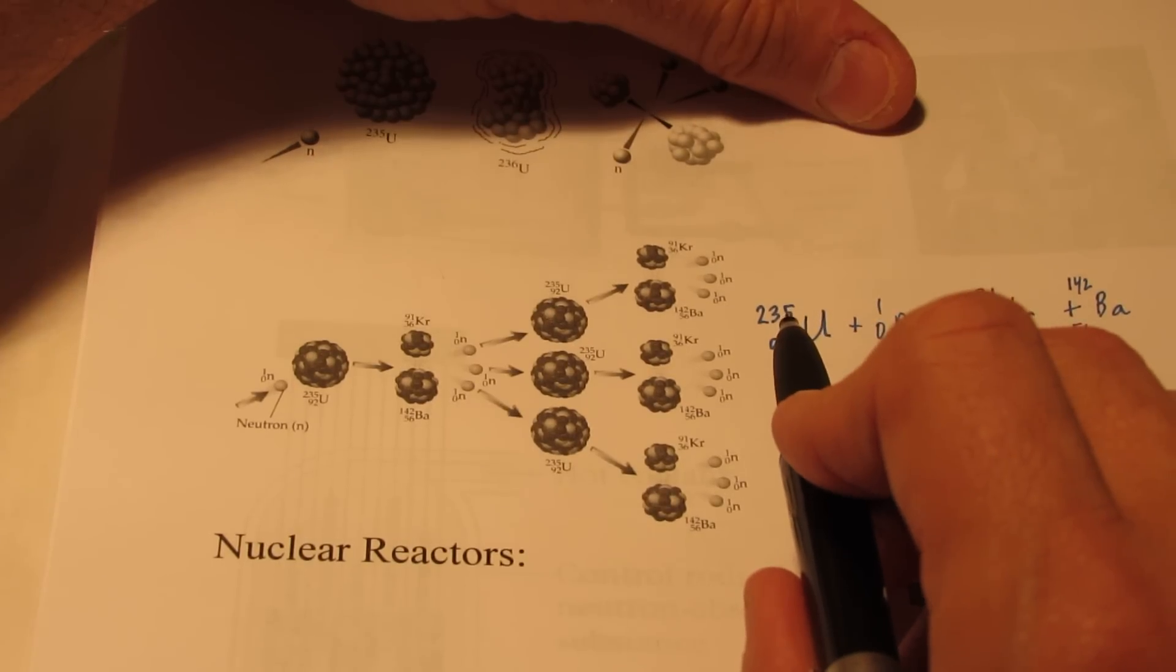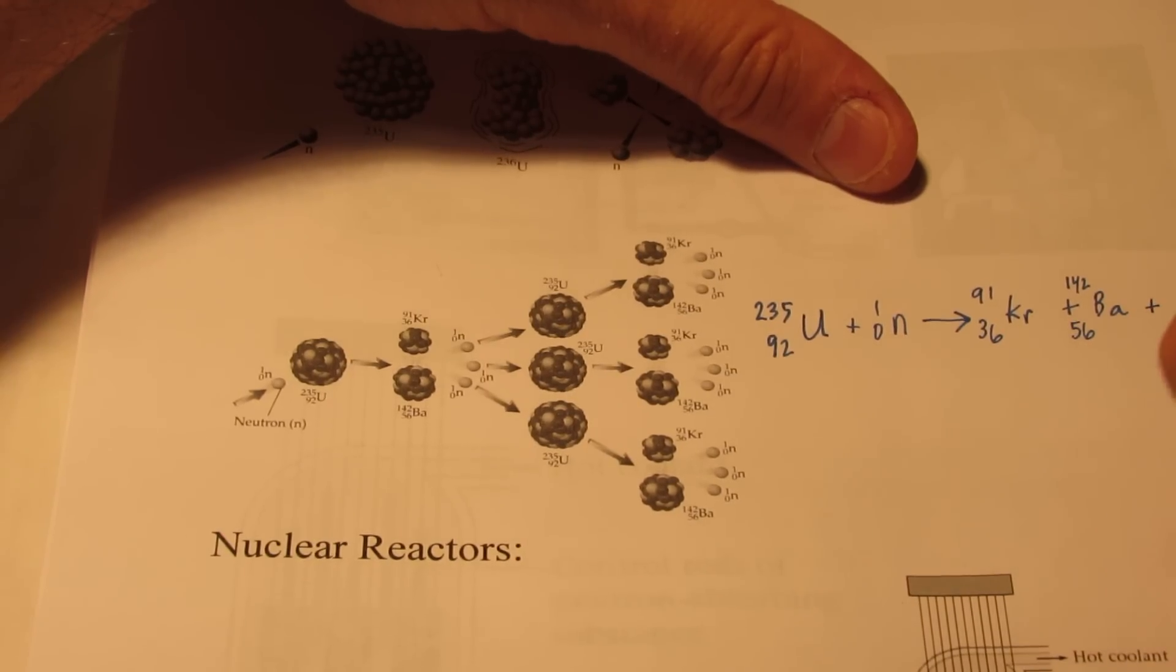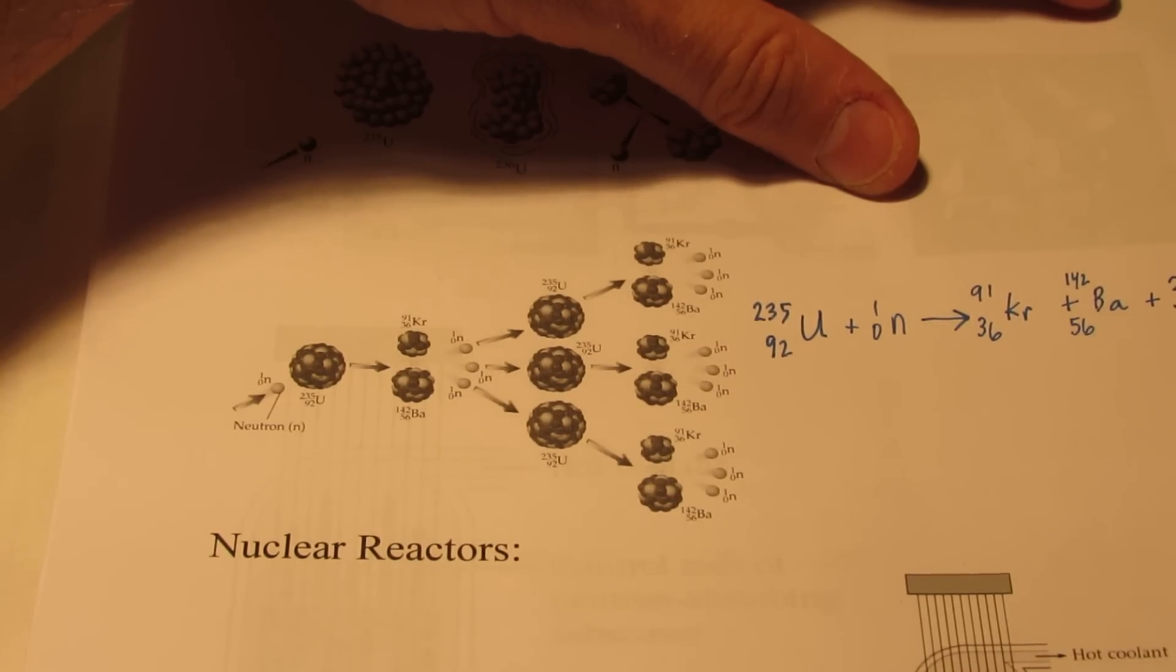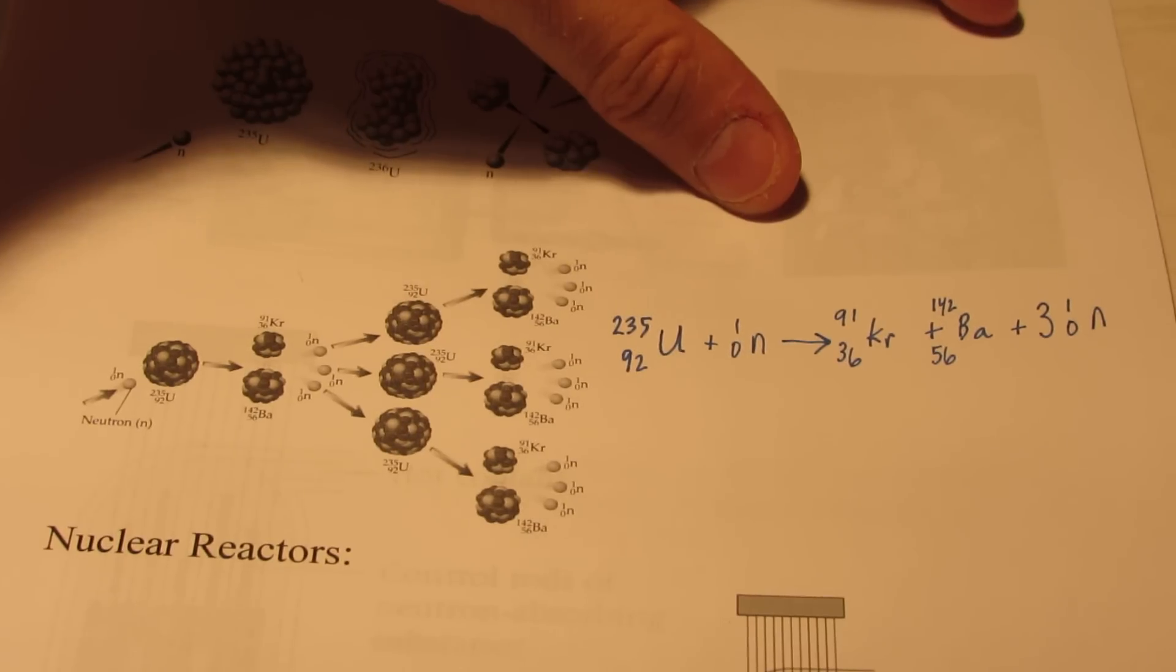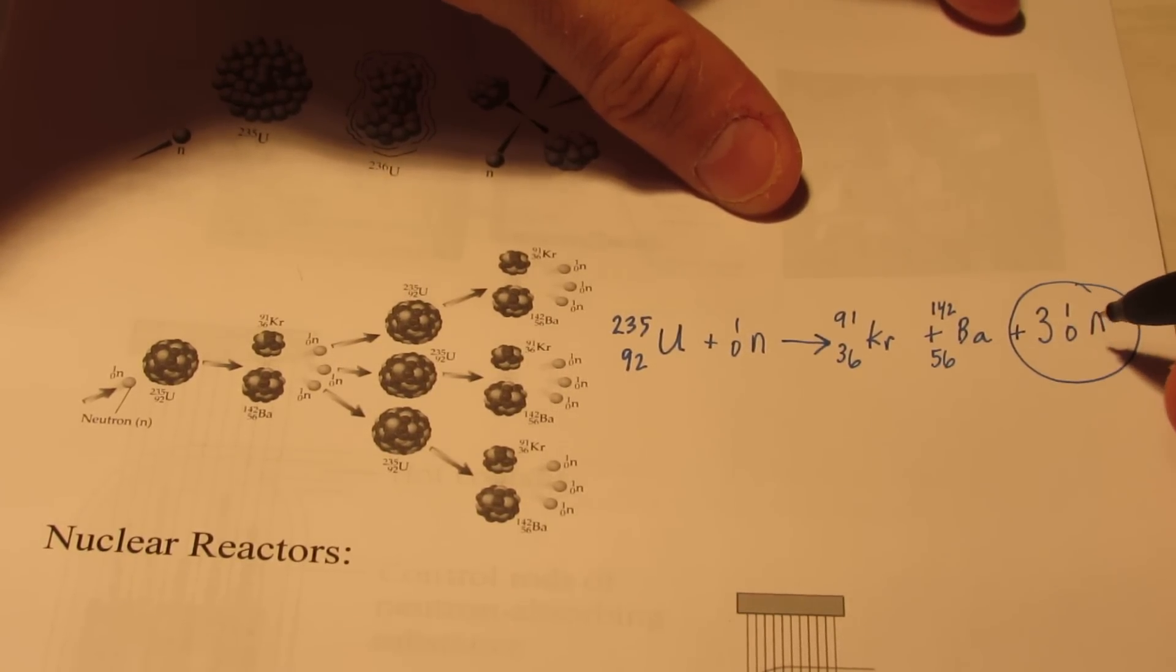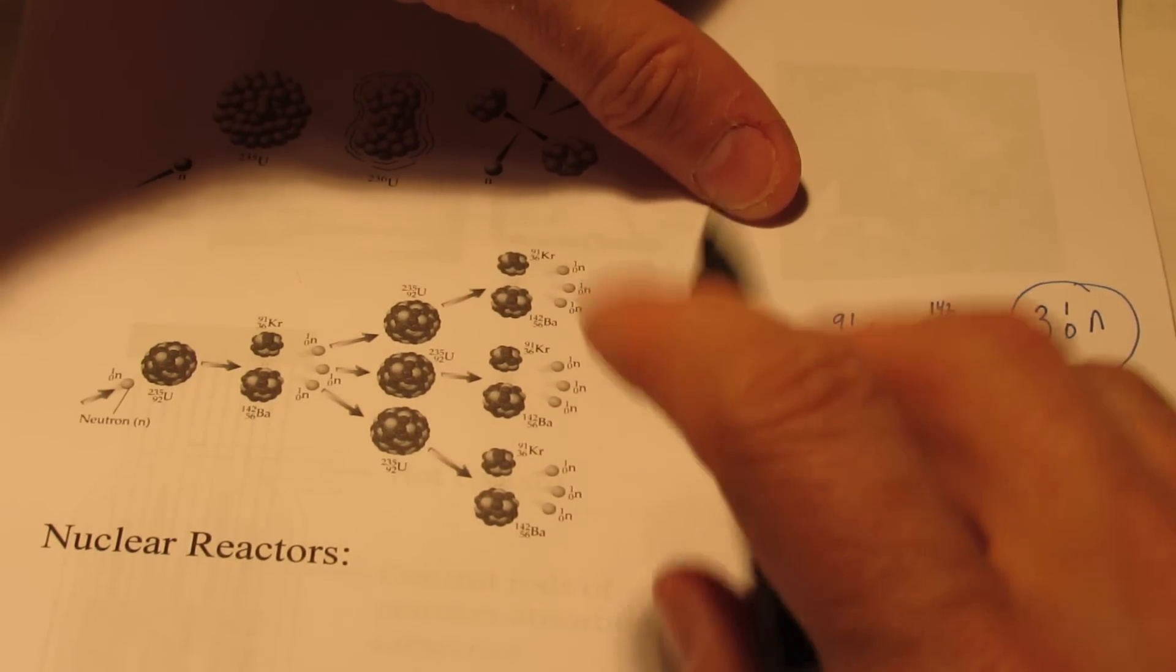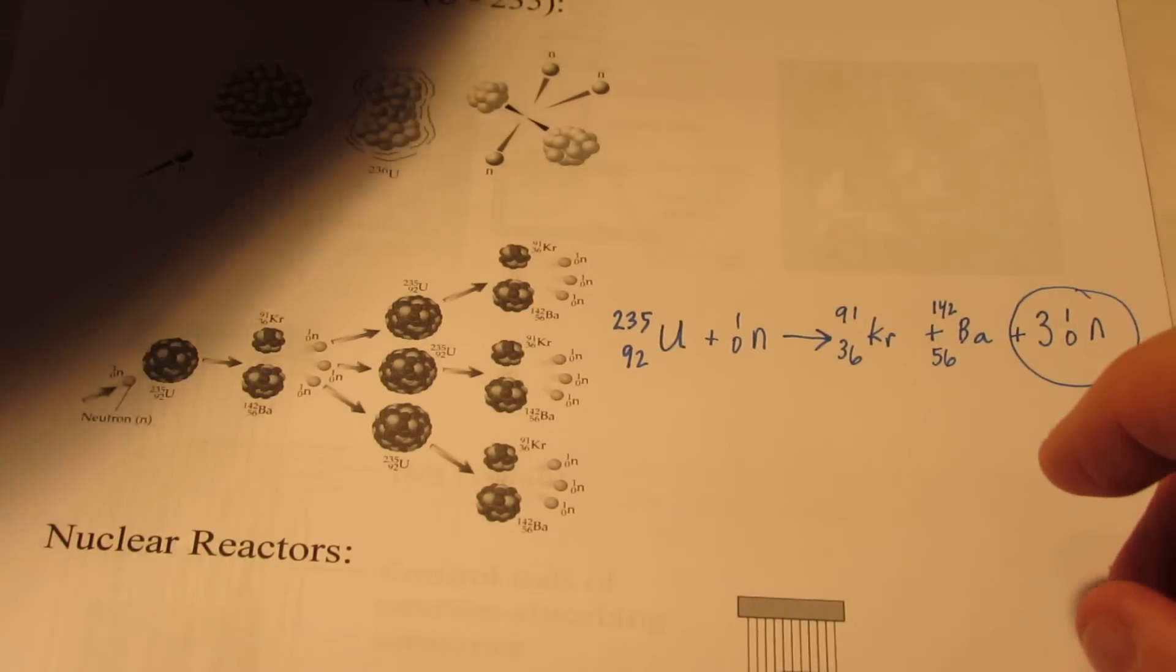Well on this side, I have 235 plus 1 for 236. So my mass is three units short, and that's where we end up with the three neutrons that are produced. And so those three neutrons that are produced can then go ahead and split additional uranium-235 atoms if the critical mass is present. If not, the reaction can fizzle.